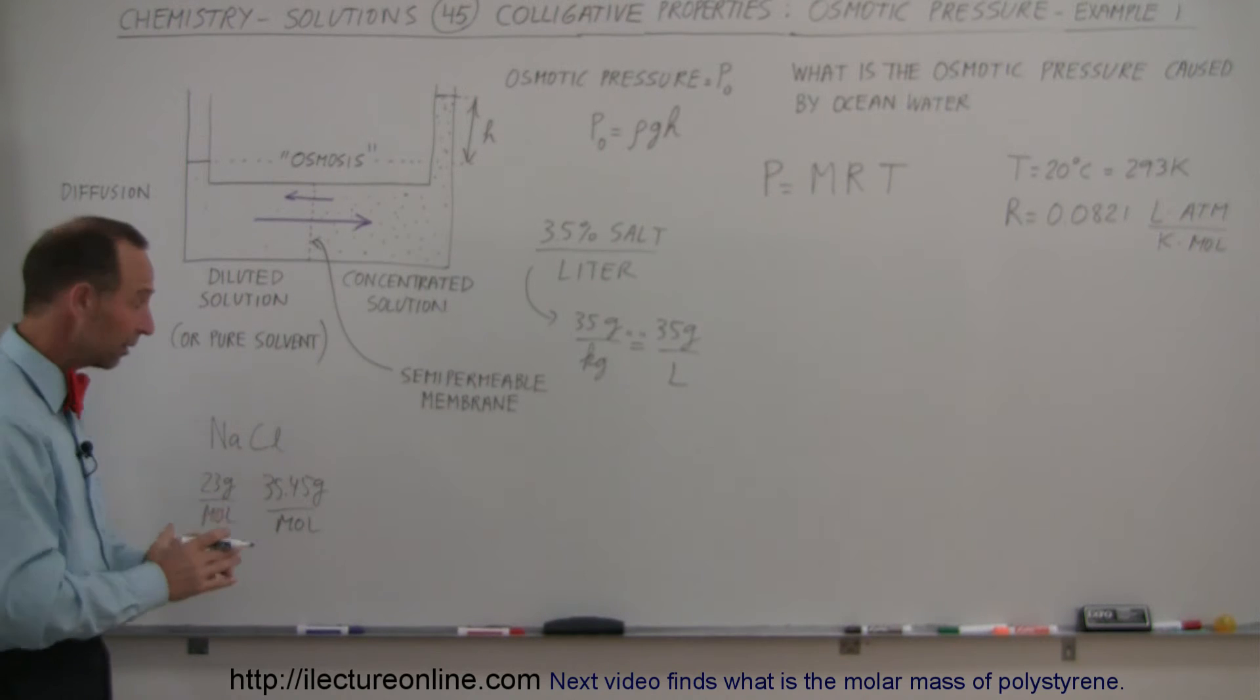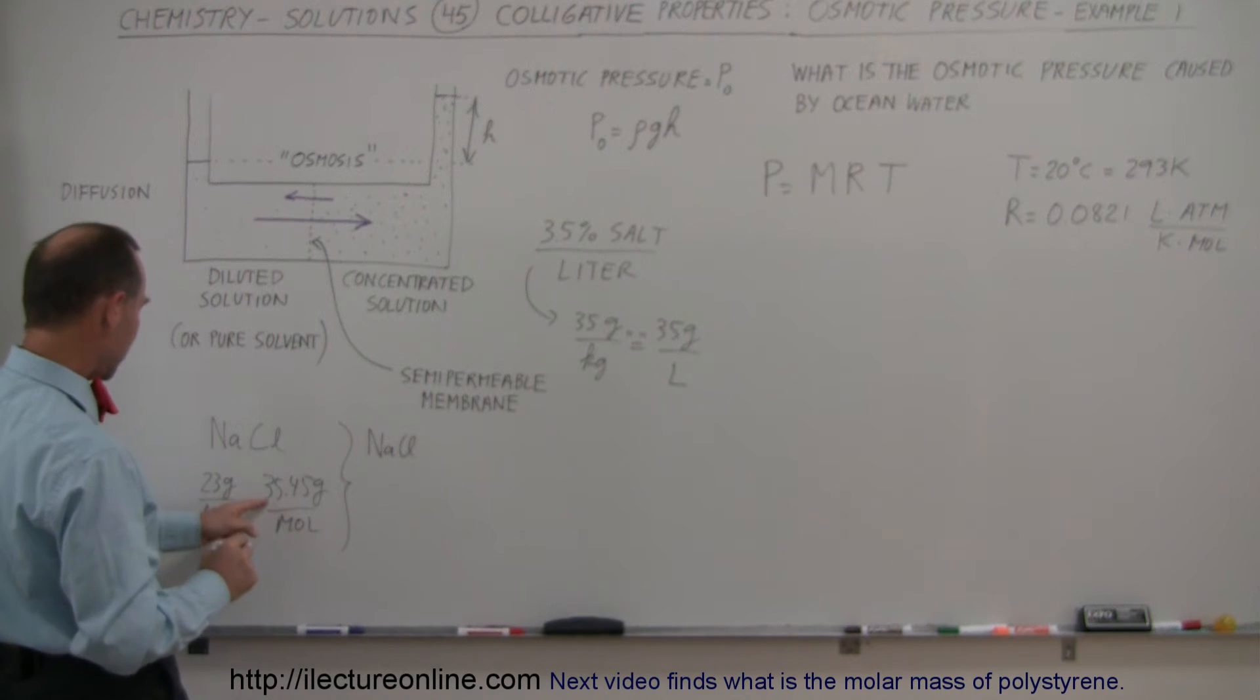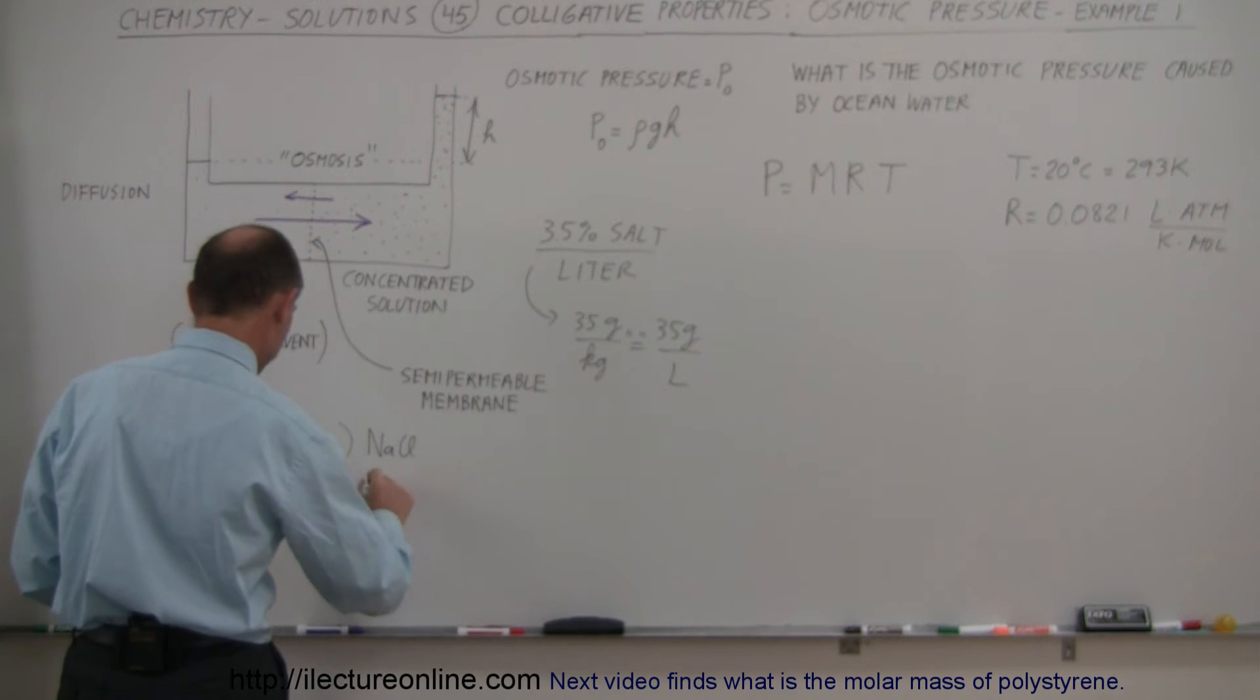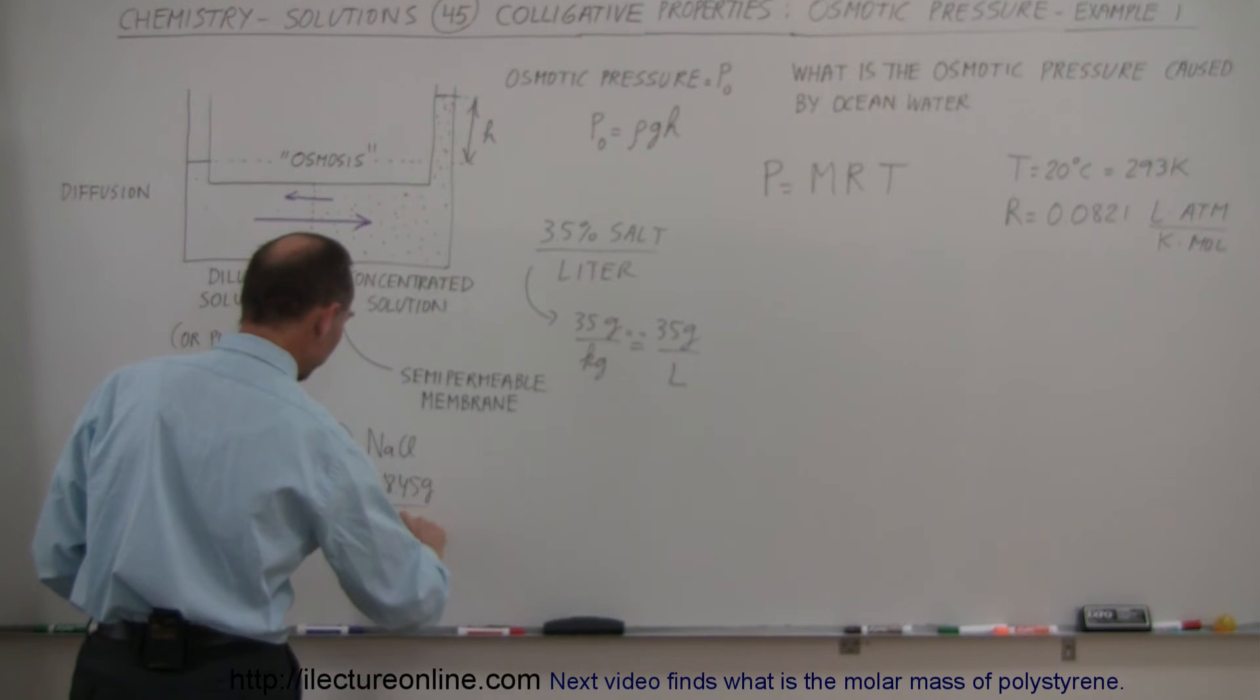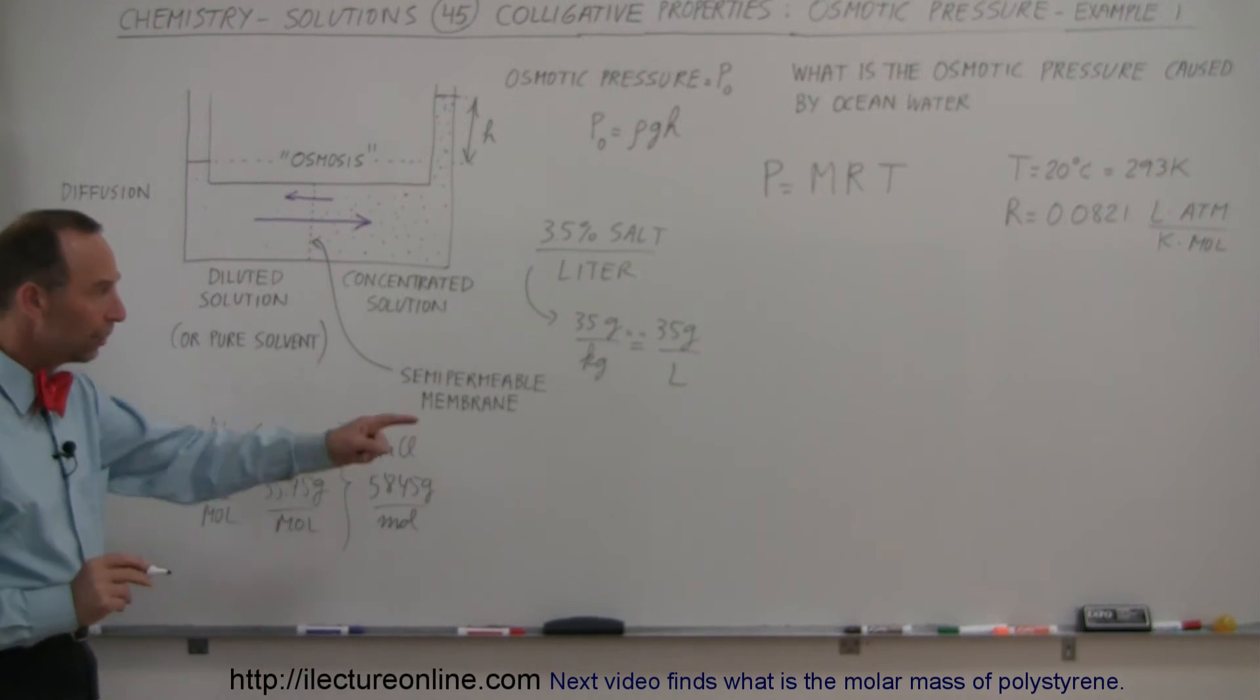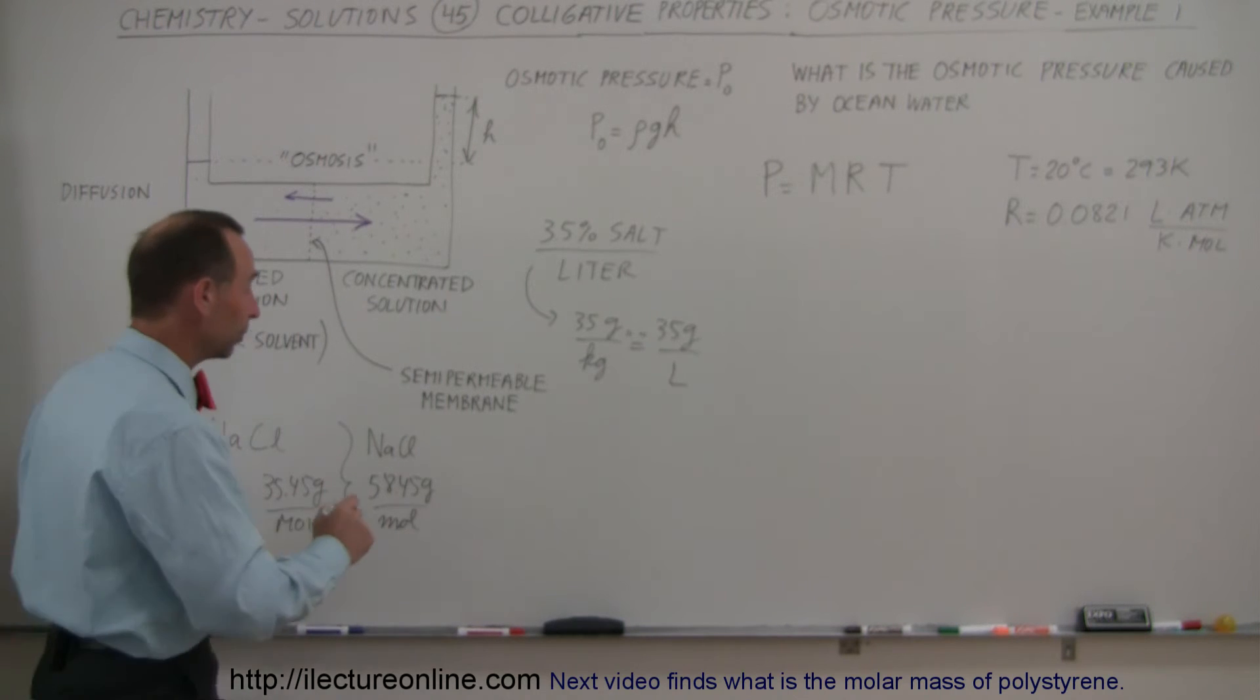All right, so if you add those two together for sodium chloride, that means 23, that's 50, that looks like 58.45 grams per mole. So that's the molar mass for sodium chloride. And notice that we have 35 grams of it in a liter of seawater, so then we can figure out from there what the number of moles will be.